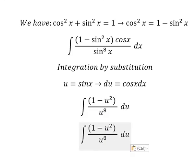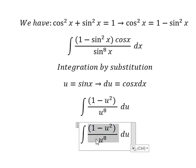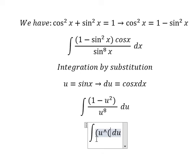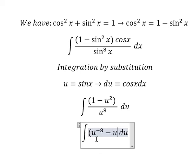Now, 1 divided by u to the power of 8, and u squared divided by u to the power of 8 — you get u to the power of negative 8 and u to the power of negative 6.